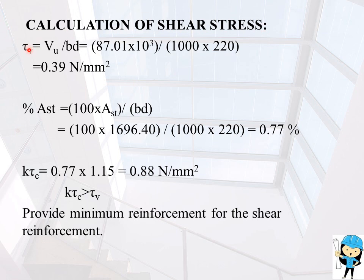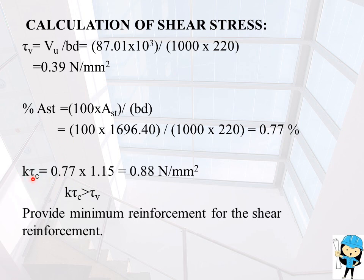For shear stress calculation, τV equals VU divided by B into D, so 87.01 × 10³ divided by 1000 into 220, giving τV = 0.39 N/mm². Percentage AST equals 100 into 1696.40 divided by 1000 into 220, giving 0.77%. K × τC equals 0.77 into 1.15, which is 0.88 N/mm². Since K × τC (0.88) is greater than τV (0.39), provide minimum reinforcement for shear reinforcement.